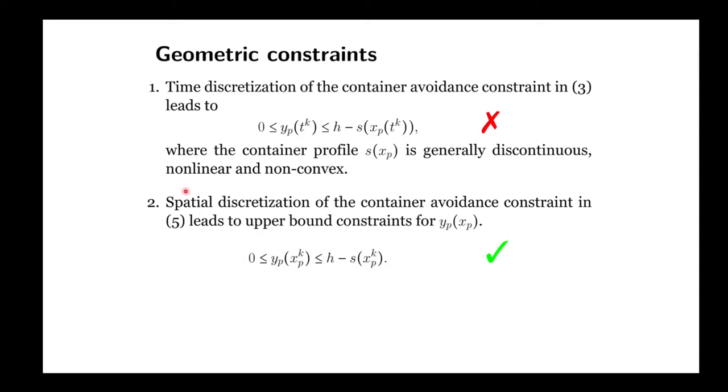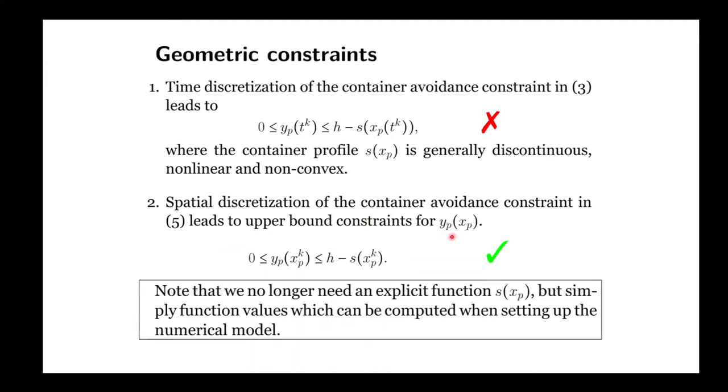But now, after the trick, spatial discretization leads to linear upper bound constraints for the height of the payload. Now, we only need the function values for the function S, and this can be computed when setting up the numerical model.